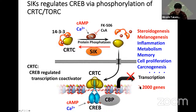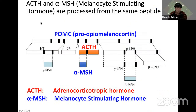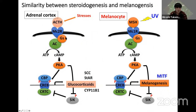The target genes of this pathway number more than 2,000, and one family includes steroidogenic genes as well as melanogenesis genes. In steroidogenic cells, ACTH binds to MC2R and activates cyclic AMP signaling, activating PKA. PKA phosphorylates CREB. At the same time CRTC is activated. SIK is induced by PKA, but at the same time PKA also suppresses SIK. The same mechanism applies in melanocytes: MSH binds MC1R, activates cyclic AMP, activates PKA and CREB, and SIK may inhibit melanogenesis.